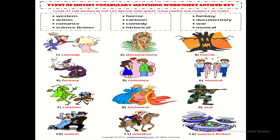Now the answer key: number one is comedy, two is documentary, three is horror, four is fantasy, five is romance, six is musical, seven is cartoon, eight is historical, nine is war, ten is action, eleven is western, and twelve is science fiction.